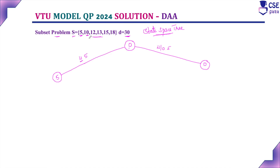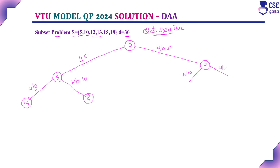The second component is 10. For both subtrees, we add this component. With 10: 10 + 5 = 15. Without 10: 5 only. On the other side, with 10: 0 + 10 = 10. Without 10: 0 only. Whenever a partially constructed solution exceeds the target sum d = 30, we stop there as a dead end — no need to proceed to the next level.